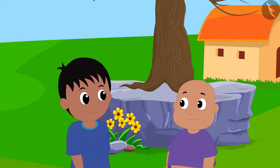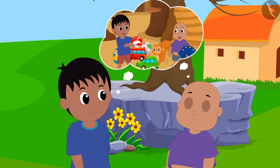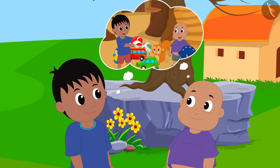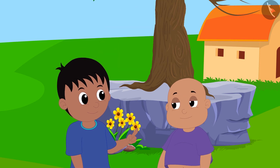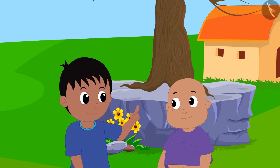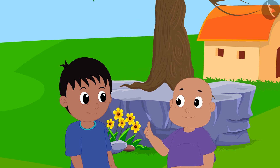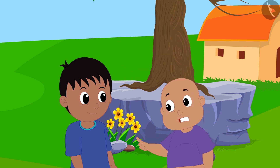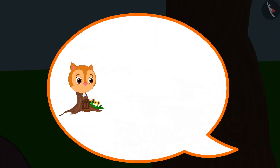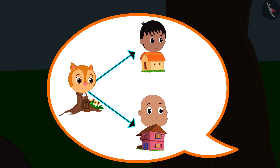Raju and Bablu are going to play at Chanda's house. Raju tells Bablu that his house is closer to Chanda's house, but Bablu is arguing with Raju that their two houses are at equal distances from Chanda's house.